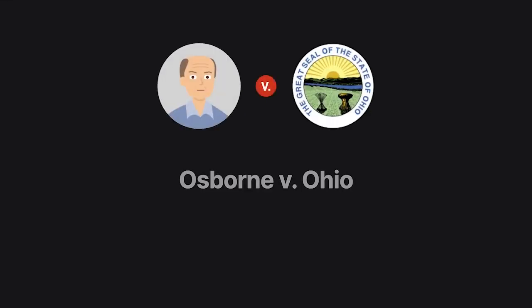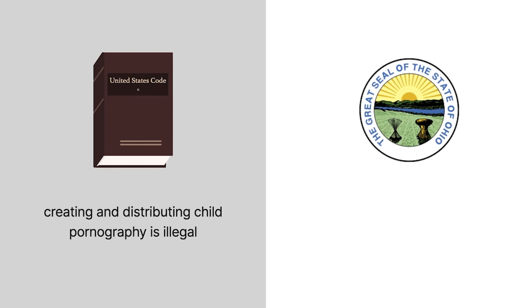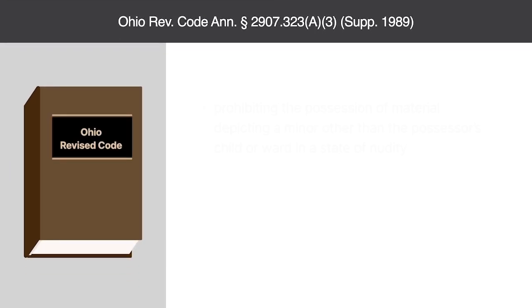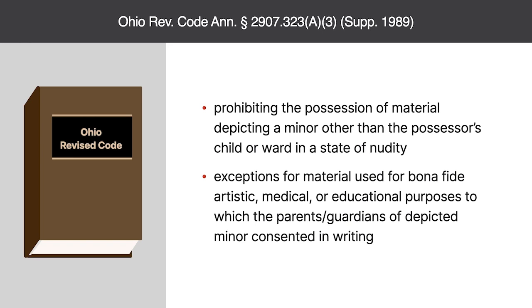In Osborne v. Ohio, the Supreme Court grappled with the always contentious First Amendment implications of regulating pornography. Creating and distributing child pornography was already illegal, but Ohio's legislature decided it needed to do more. Accordingly, it passed a law prohibiting the possession of material depicting a minor other than the possessor's child or ward in a state of nudity. It made exceptions for material used for bona fide artistic, medical, or educational purposes, to which the parents or guardians of the depicted minor consented in writing.